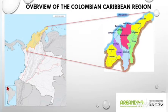Overview of the Colombia Caribbean region. It is the northernmost continental and maritime natural region in the country. It has an area of 132,280 square kilometers and includes the following cities: Barranquilla, Cartagena de Indias, Santa Marta, Valledupar, Montería, Sincelejo, and Riohacha.